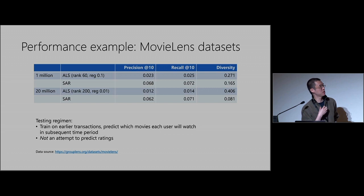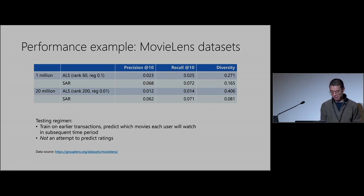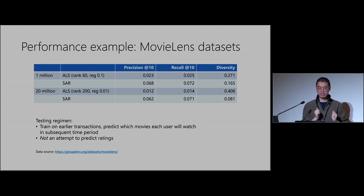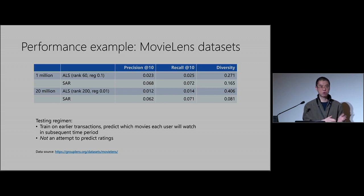Here's a quick performance example. We tested this on the MovieLens dataset, which is freely available. Precision and recall for SAR turned out to be a lot higher than for ALS, the implementation in Spark MLlib. Though I should mention the testing regime is a bit different — we train on earlier transactions and try to predict which movies a user will watch later. We're not trying to predict ratings; we believe the question we're asking is more relevant to most customers: what is this person going to spend money on?